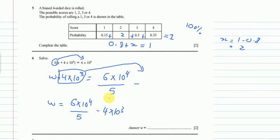And when you will do this in your calculator, you will end up getting w is equals to 8,000.